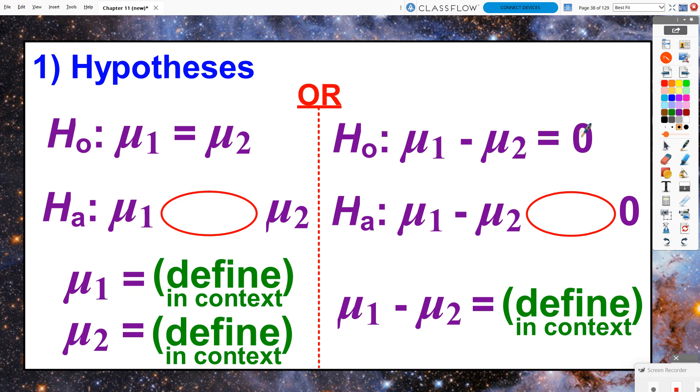Hypotheses for a two-sample problem. You can write it one of two ways, and this was the same kind of scenario that we talked about with proportions a couple chapters ago. We can either state that our two population means are equal to each other, or we could write it as the difference of the means would have to equal 0. For our alternate hypothesis, one of three situations are going to happen. We're either going to go greater than, less than, or not equal to.